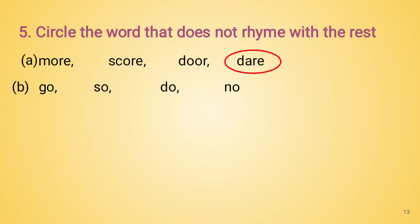Next set: go, so, do, know. Which is the word that is not rhyming with the other words? Yes, it is the word do. So we will circle the word do.